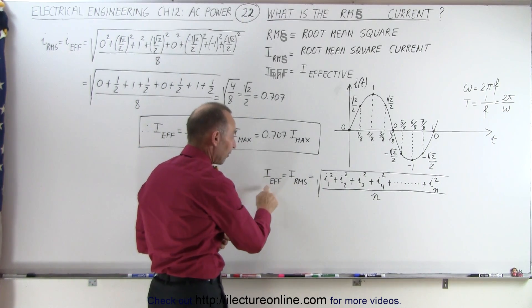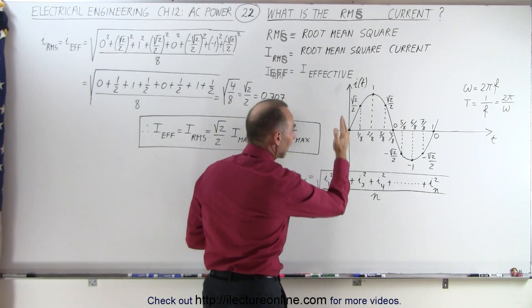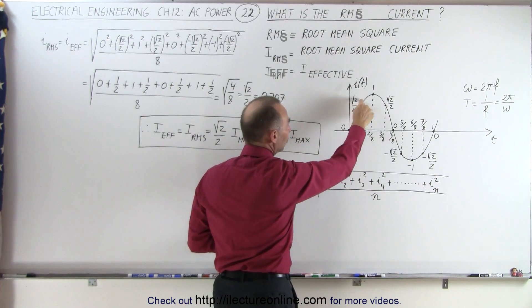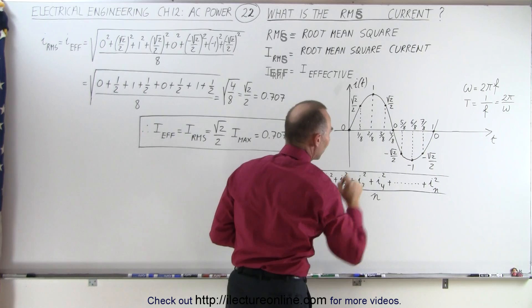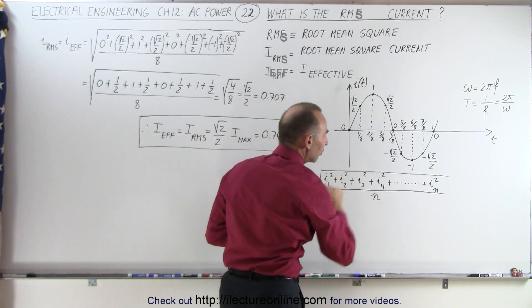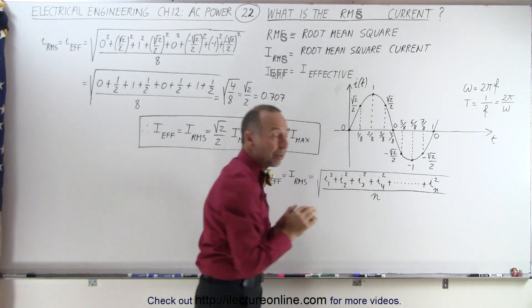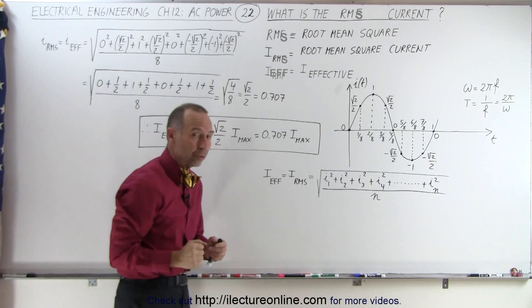By definition, the RMS current, or the effective current, is equal to the square root of the value of the current at each one of those intervals, I1. So we start with I1 over here, I2, I3, I4, I5, I6, I7, I8. We square those values, add them all up, then divide that by the total number of samples that we took, and take the square root of that, and that then gives us the RMS current, or the effective current that affected that equivalent DC current.